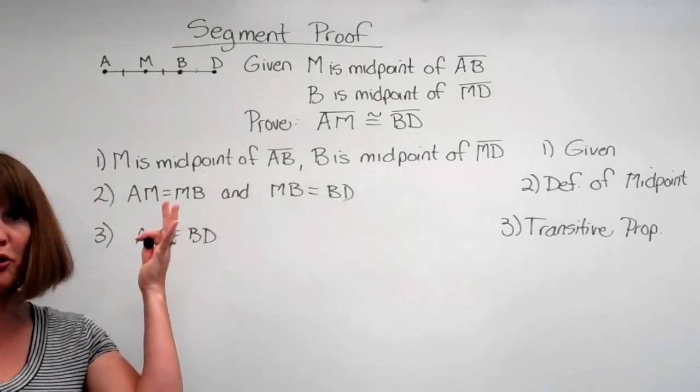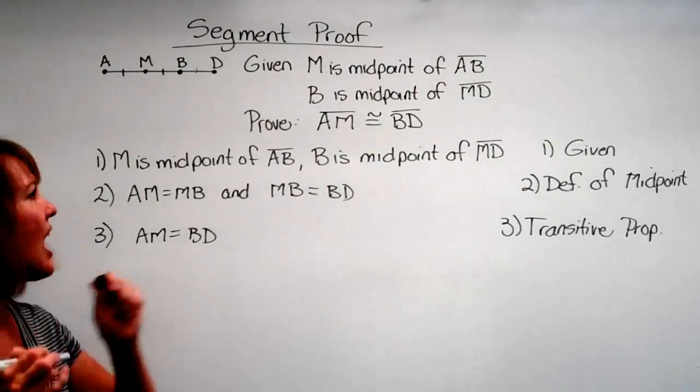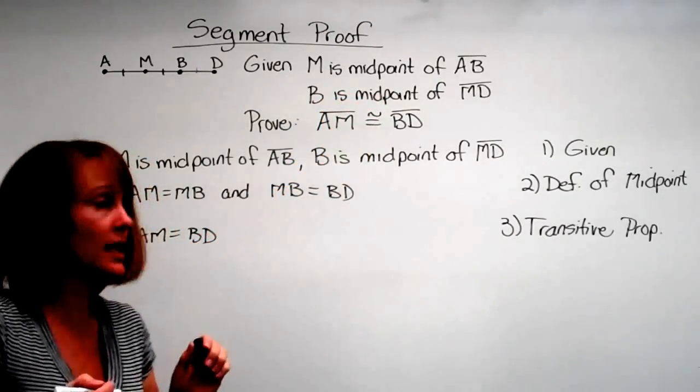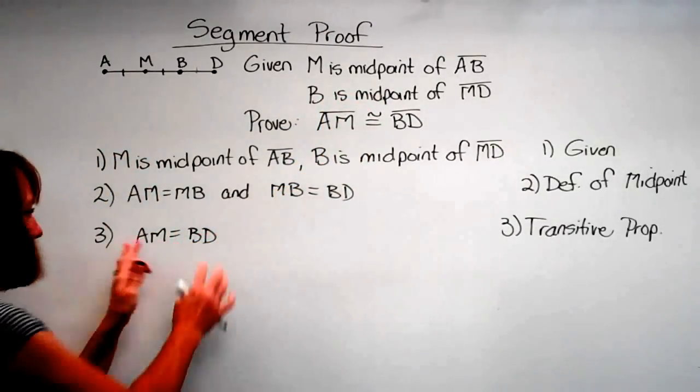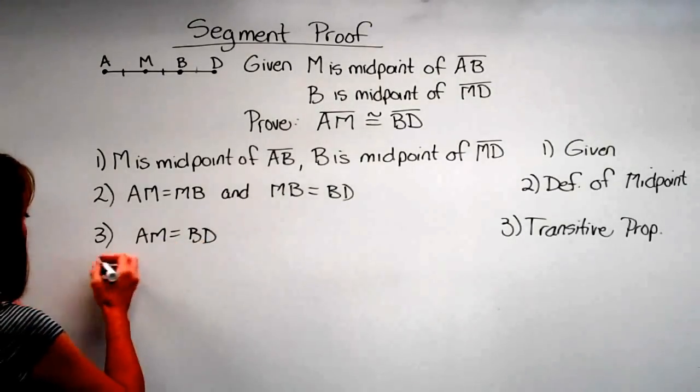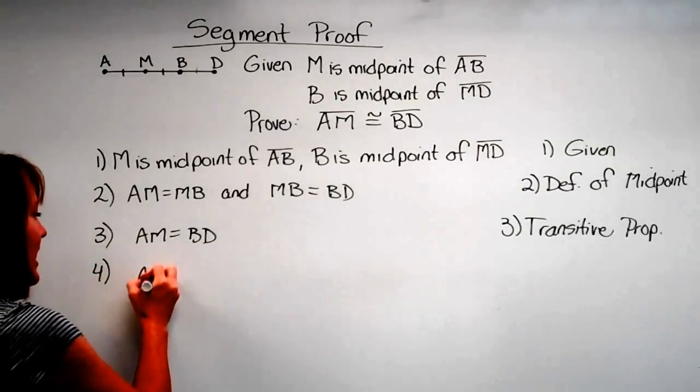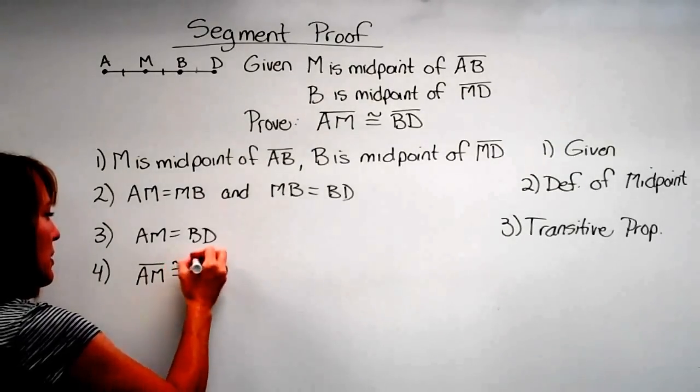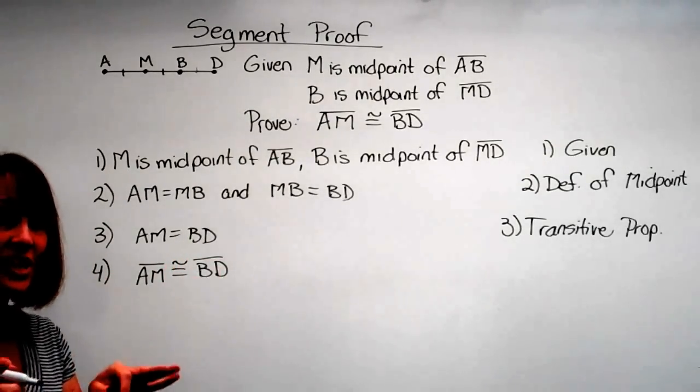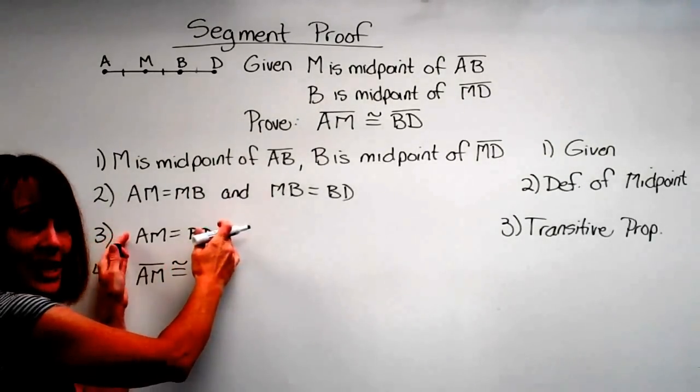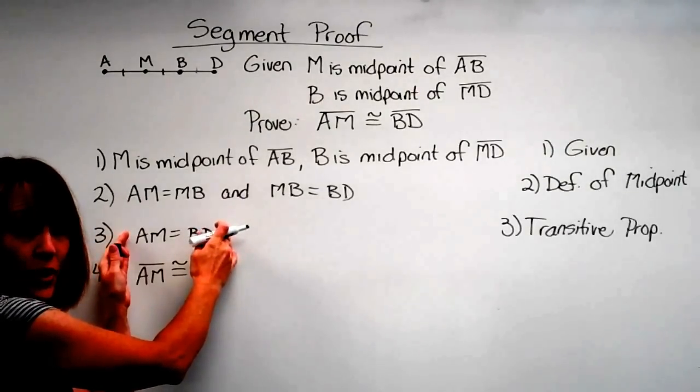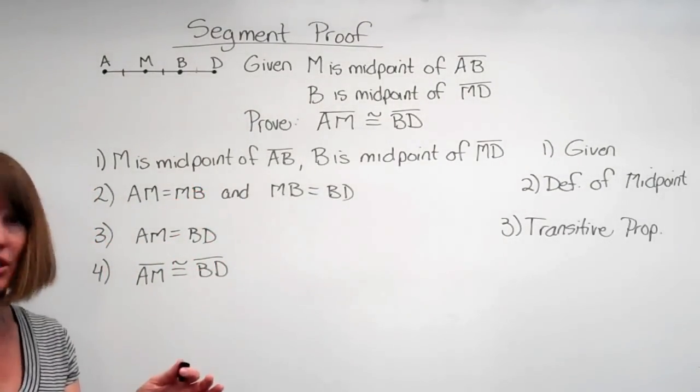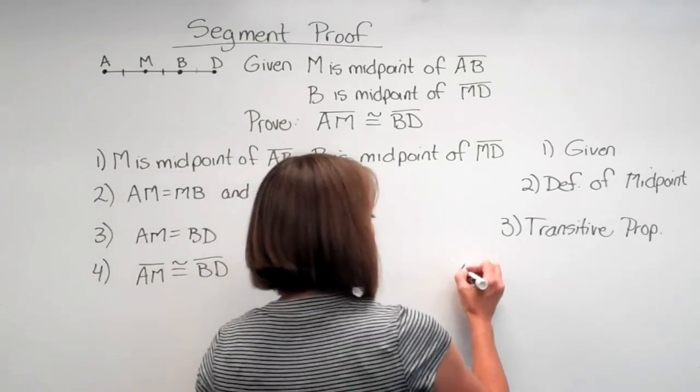Okay, and you go, yes, we've proved that. Oh no, we haven't. I wanted segment AM is congruent to segment BD. But wait a minute, isn't that this definition? Can't we jump from here then and say segment AM is now congruent to segment BD? Because the definition says that if the measures of the segments are equal, then the segments are congruent. And that's the definition of congruent segments.